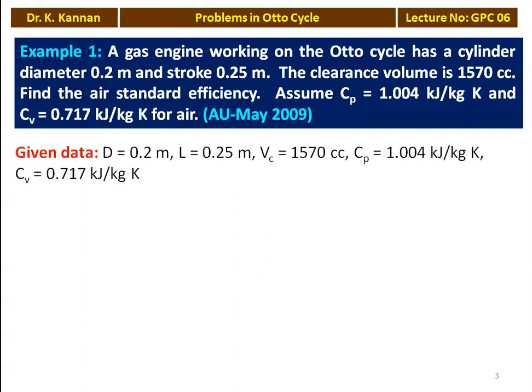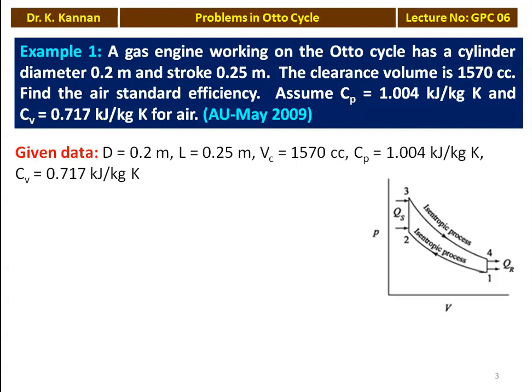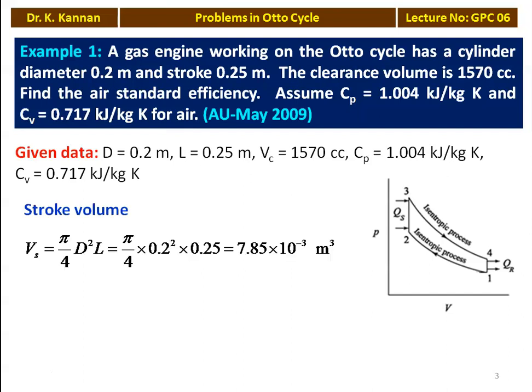The PV diagram is shown. The diameter is 0.2 meter, stroke length L equals 0.25 meter, clearance volume Vc equals 1570 cc. Cp equals 1.004 kJ/kg·K and Cv equals 0.717 kJ/kg·K. The stroke volume Vs equals pi/4 × d² × L equals pi/4 × 0.2² × 0.25 equals 7.85 × 10⁻³ m³.